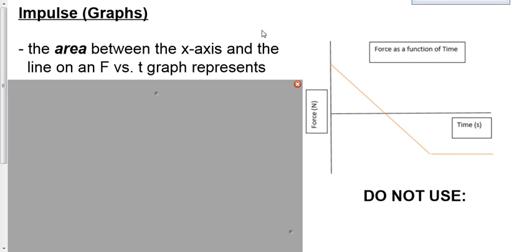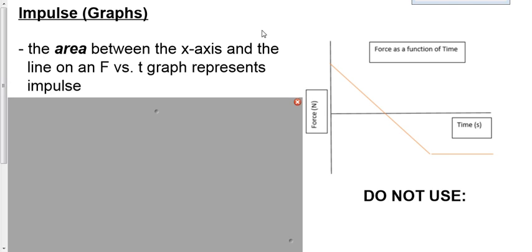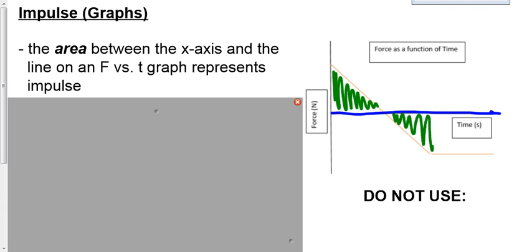The area between the x-axis and a line on an F versus T graph represents impulse. On this force versus time graph, you can see force on the y-axis and time on the x-axis. Time is our manipulated variable and force is our responding variable. The areas above and below the x-axis are what we're talking about — the area between the line and the x-axis.